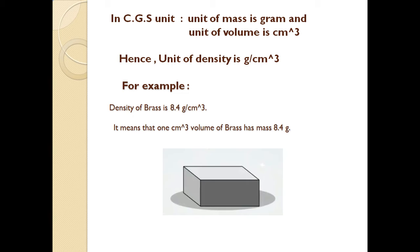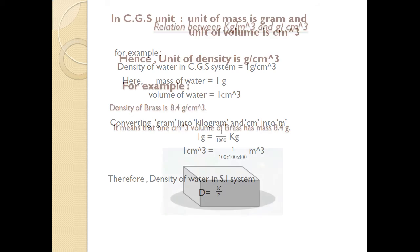For example, if someone tells me that the density of brass is 8.4 gram per centimeter cube, what does it mean? It means that 1 centimeter cube volume of brass has a mass of 8.4 gram.